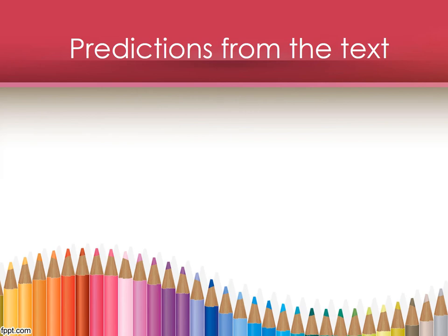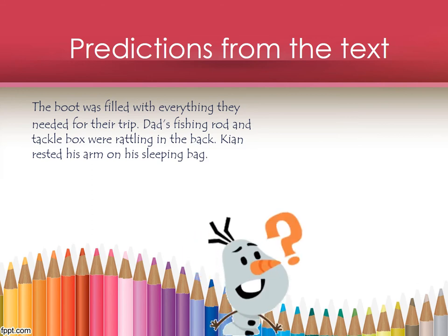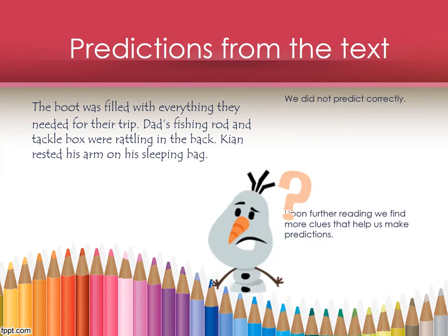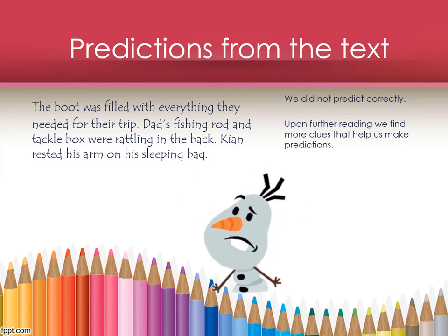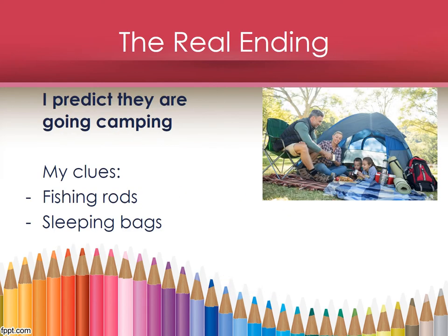The boot was filled with everything they needed for their trip. Dad's fishing rod and tackle box were rattling in the back. Kian rested his arm on his sleeping bag. Now, what do you think will happen next? At first, we thought Kian was going to the beach, but now we have even more clues with words like fishing rods and sleeping bags. So maybe we can predict they are going camping. The family was off on their vacation. The two-hour drive would soon come to an end and the camping fun could begin. Sometimes our predictions are right and sometimes they are not. Remember, it's okay if you are not right as long as your prediction makes sense.